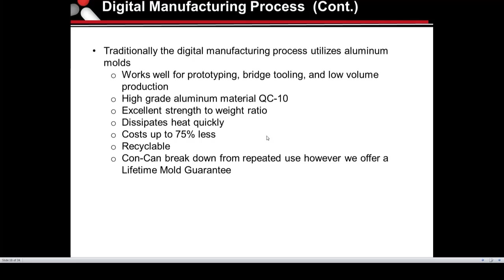Aluminum works well for prototyping, bridge tooling, and low-volume production. The only con is it can break down over time — if you're using a high-abrasive material like a glass-filled nylon, it will limit tool life. But with Eccentric, we offer a lifetime mold guarantee. If there is tool wear, we guarantee the tool for the life of the project, which means no limit on parts. If the tool does wear, we'll either address it, fix it in the tool, or cut a new tool.